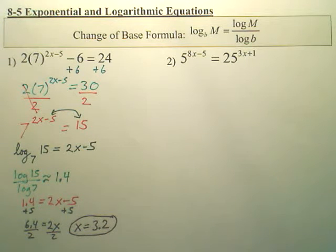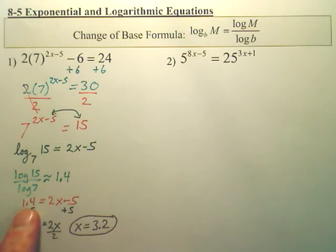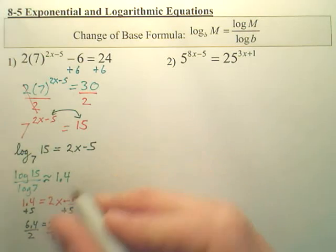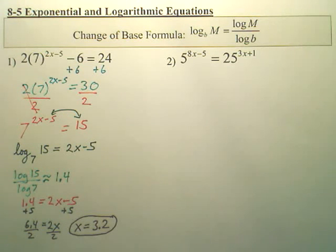Now, if you did not have a calculator, what you would do is you'd leave log 15 over log 7, and this whole thing would just kind of have log 15s and log 7s all the way through. It kind of would look like this. Actually, I'm not going to show it. Leave it like that for now. You'll see it on their benchmark the other way.